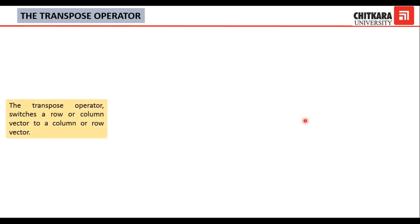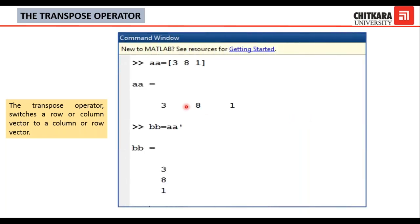Next is the transpose operator. The transpose operator switches a row to a column or a column to a row. In the example, aa equals [3 8 1] — a row vector with three elements. When bb equals aa' (the apostrophe/quotation mark symbol in your keyboard), pressing Enter shows that this row vector has been switched to a column vector. That is the role of the transpose operator.